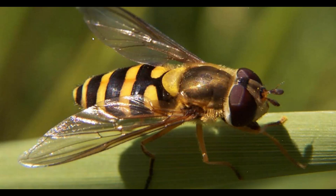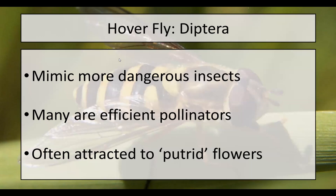Hoverflies are very efficient pollinators — great in agricultural fields and they can help pollinate your garden. They are often attracted to putrid flowers, like corpse flowers and things that have putrescine. They belong to an order called Diptera, which means two-wing. If someone's asking — yes, hoverflies are found pretty much nationwide. There are several different species, sometimes called flower flies or corn flies, found in many areas across the United States.